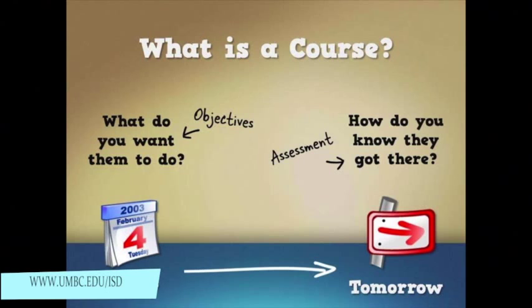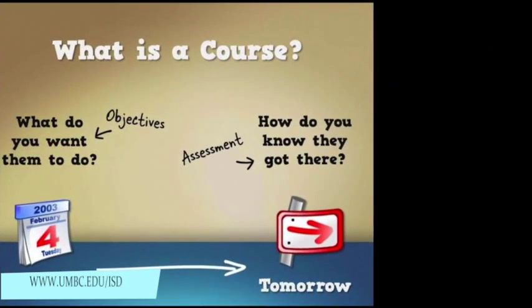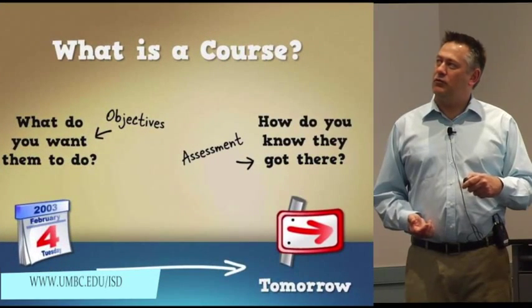So what do you want them to do, and then how do you know they got there? A lot of times people will ask me, how do I measure the effectiveness of my course? Well, it all starts with having clear objectives. If you have clear objectives — what is the course supposed to do, why are they taking it — then from that comes the basis for your assessment: how do you assess their understanding of the content and whether they actually met the goals of the course?